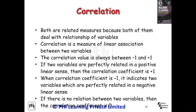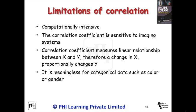Careless data collection may demonstrate that rain is dependent on crop yield, and this type of analysis incorrectly concludes that in a heavy rainy season there is a guaranteed big crop yield. Correlation and regression analysis are related measures because both deal with relationships of variables. Correlation is a measure of linear association between two variables; the correlation value is always between minus 1 and plus 1. If two variables are perfectly related in a positive linear sense, the correlation coefficient is plus 1; if perfectly related in a negative linear sense, it is minus 1. If there is no relation between two variables, the correlation coefficient is zero. One major disadvantage is that it is computationally intensive and sensitive to imaging systems. Correlation coefficient measures linear relationships, so if the relationship is non-linear, the result is inaccurate, and it is meaningless for categorical data such as color or gender.